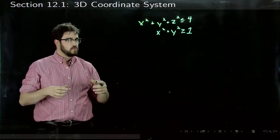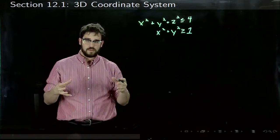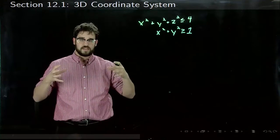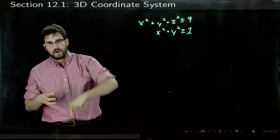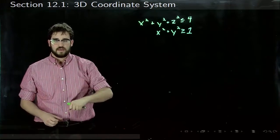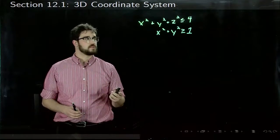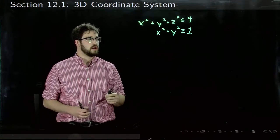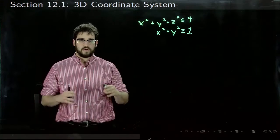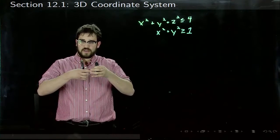So the region would be this ball of radius 4. And we have to drill out a cylinder in it of radius 1. Since it's x²+y² ≥ 1, we want everything outside the cylinder of radius 1, rather than anything inside.